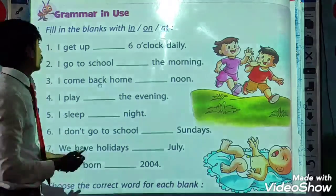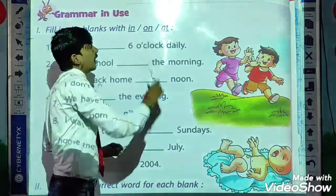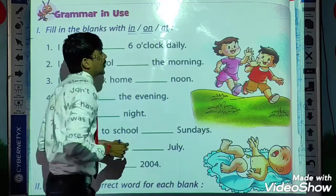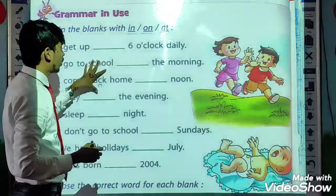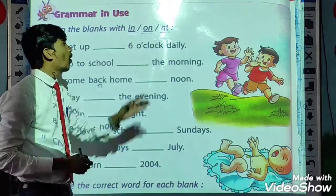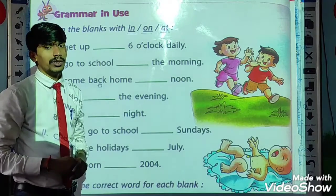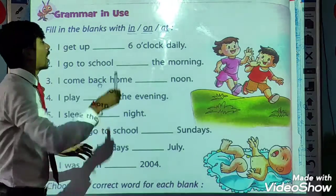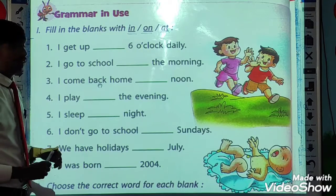Now you see here the question says: fill in the blanks with 'in,' 'on,' or 'at.' So these three words are given: in, on, at. And blanks are given. What we have to do? We have to fill these blanks using in, on, or at. What are these words? These words are called prepositions. So we have to use these three words in these blanks.